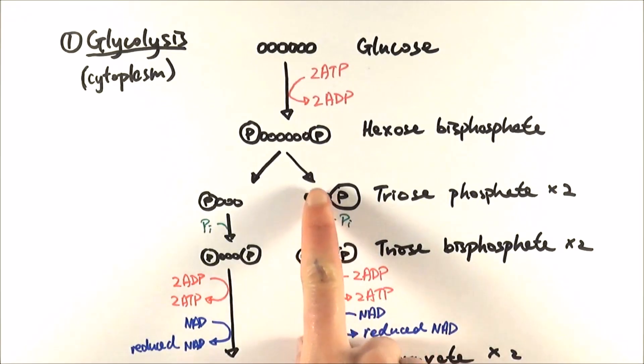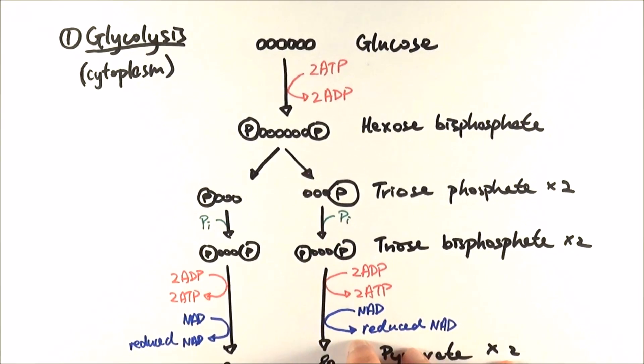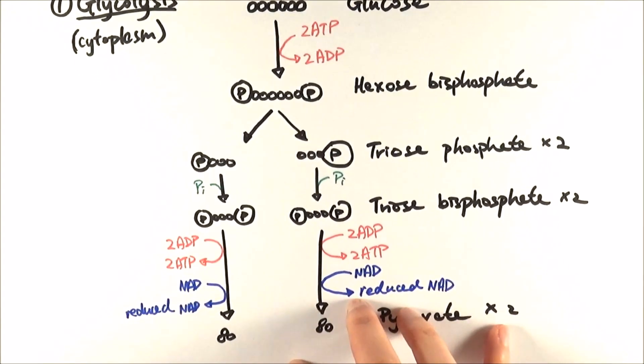In the cytoplasm, it's converted into hexose bisphosphate with the help of 2 ATP donating their phosphate groups. Then hexose bisphosphate is broken down into 2 triose phosphate.